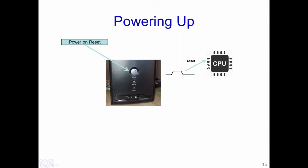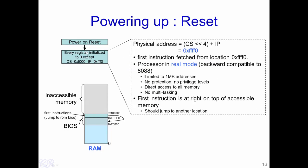Let us see what are the various steps involved when the CPU starts to boot. We have seen the power-on reset. When the power-on reset occurs and the CPU detects it, every CPU register inside the CPU is initialized to 0 except for two registers. These registers are the code segment and the IP. When the reset occurs, the code segment is set to the value of 0xF000 and the instruction pointer is set to 0xFFF0.